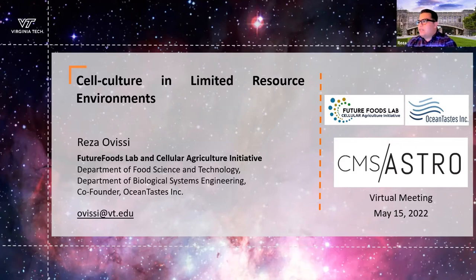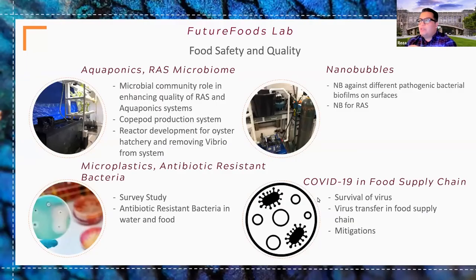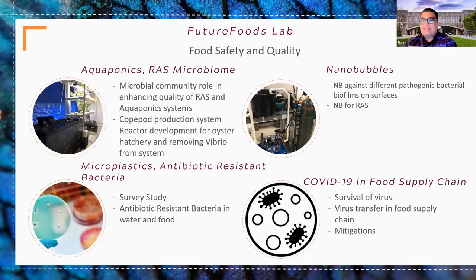I would like to start talking about my program at Virginia Tech, which is the Future Foods Lab and Cellular Agriculture Initiative. Under this program, we focus on different novel methods for producing food — for example, different types of research with aquaponics, using microbial communities to improve plant and animal production, enhance water quality, and reduce antibiotic-resistant bacteria from the system.